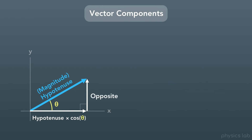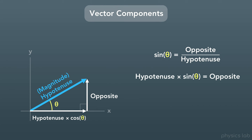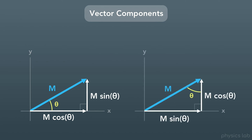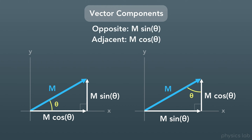Now let's find the opposite side. For that, we're going to need the sine function, which includes the opposite side. Just like before, we can rearrange this equation by multiplying both sides by the hypotenuse, and we get that the hypotenuse times the sine of theta equals the opposite side. To make this simpler, let's call the hypotenuse m for the magnitude of the vector. So the x component is m times the cosine of theta, and the y component is m times the sine of theta. However, if we were given the other angle, then the x component is m times the sine of theta, and the y component is m times the cosine of theta. Just remember the trig functions, which will tell you which component is which based on the angle you're given. The opposite side from the angle is always m times the sine of theta, and the adjacent side to the angle is always m times the cosine of theta.